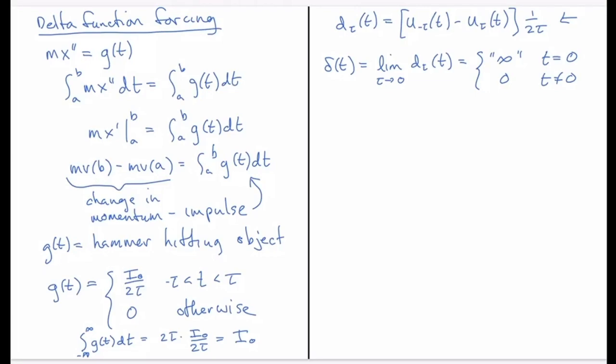You'll notice because we got rid of the I_not from this, the units on the delta function are 1 over time, because it's just the 1 over 2τ that's left. Then you multiply it by some constant to give it whatever units it needs. If it needs to have units of momentum, you multiply by momentum and you get momentum per unit time. Or if you're dropping sugar into a vat then it would be concentration or mass of sugar per unit time.